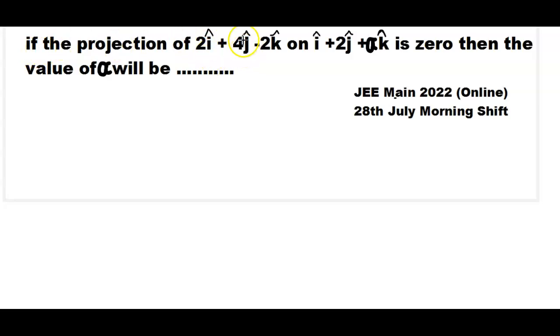If the projection of 2i cap plus 4j cap minus 2k cap on i cap plus 2j cap plus alpha k cap is 0, then the value of alpha will be? So I'm looking at the solution.